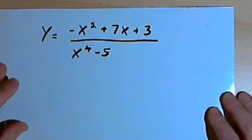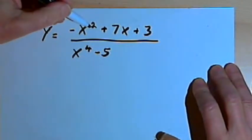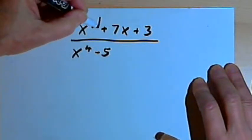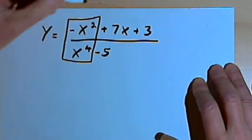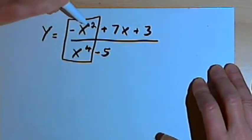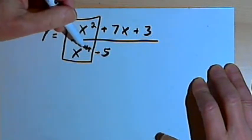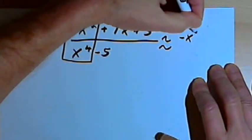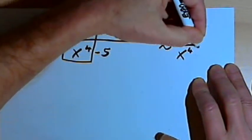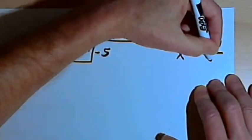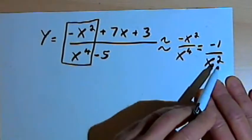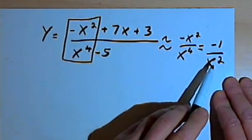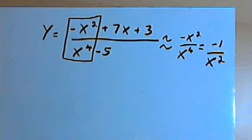Here's another one with a horizontal asymptote of zero: y equals negative x squared plus 7x plus 3 over x to the fourth minus 5. The degree in the denominator is considerably greater than the degree in the numerator — the numerator has degree 2, the denominator has degree 4. The fraction will equal approximately negative x squared over x to the fourth, which reduces to negative 1 over x squared. So once again, as x gets large, this fraction will become a very small number.